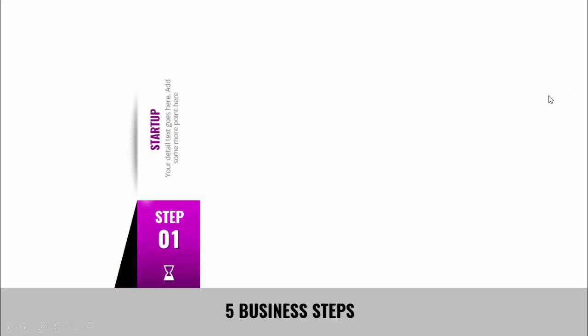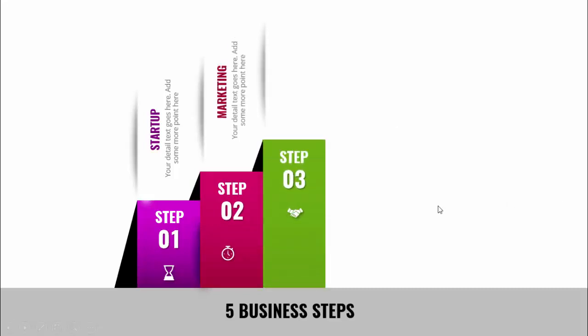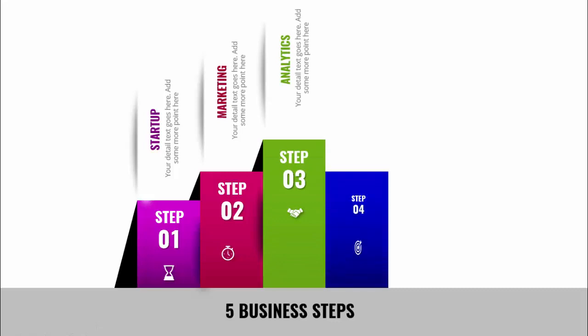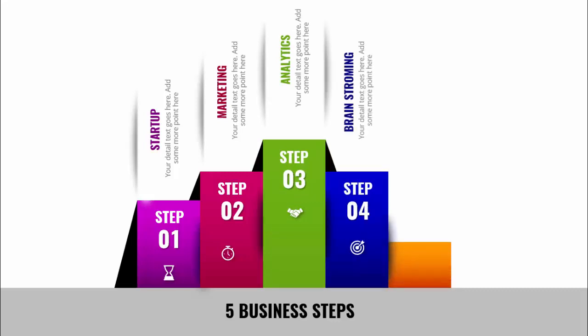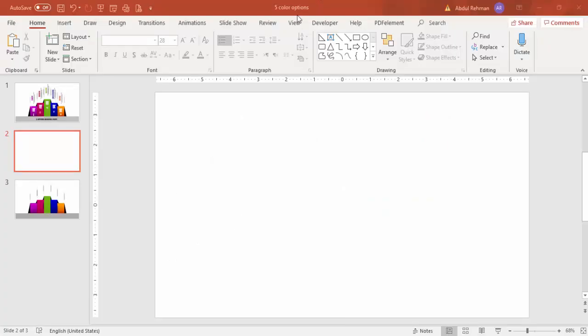In today's tutorial I'm going to show you five business steps infographics slide in PowerPoint. This is how the slide works: when I click it will show the first step — you can see I've added the gradient fill along with the shadow effect, step one with the icon. You can add your detailed text like 'startup' and when I click it will show the second step, then marketing, the third step analytics, fourth brainstorming, and the fifth step is success.